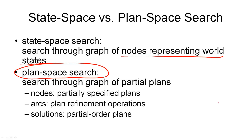In this graph, the nodes are partially specified plans — not complete plans that we can execute yet. The arcs in our search space are plan refinement operations, telling us how we can move between partially specified plans, usually by refining them and adding more content. Finally, we have a new concept of solution: partial order plans, in which actions are not in a total order as seen previously.